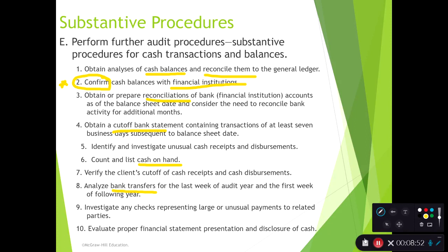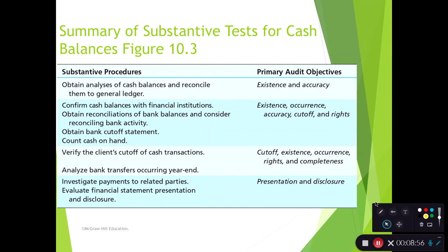These tables where you're looking at a substantive procedure and matching it up with an audit objective or assertion are really helpful to understand the important link between procedures and audit objectives. At the end of the day, we're trying to verify these audit objectives and get assurance and comfort around them. If we think a procedure is getting us assurance but it really isn't, that opens us up as auditors to more risk.